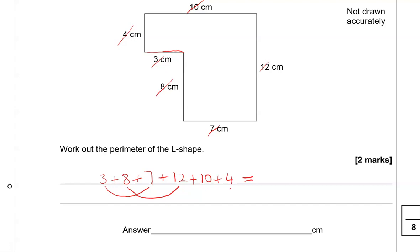So 3 and 7, that is 10. 8 and 12 is 20. So 20 and 10 is 30, and the 10 is 40, and the 4 is 44. So 44 cm.